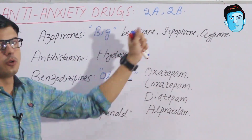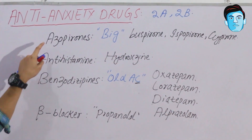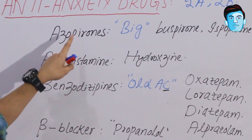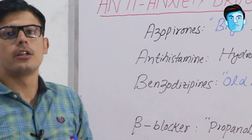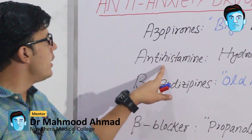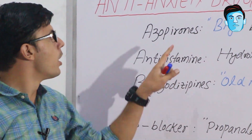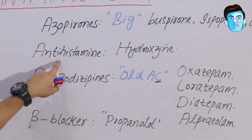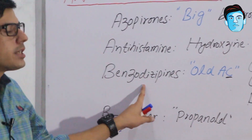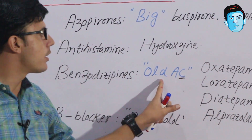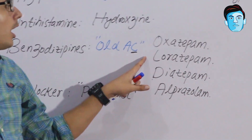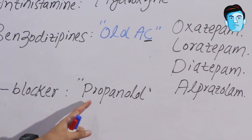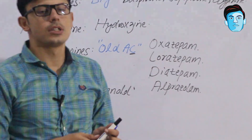Where A stands for azapirones and another A stands for antihistaminics. The main difference is that azapirones are non-sedative — they do not induce sleep — while antihistaminics are sedative and do induce sleep. Azapirones include buspirone, gepirone, and related drugs. Antihistaminics include hydroxyzine. B stands for benzodiazepines — OLD AC: oxazepam, lorazepam, diazepam, alprazolam. Another B stands for beta blockers, which include propranolol.